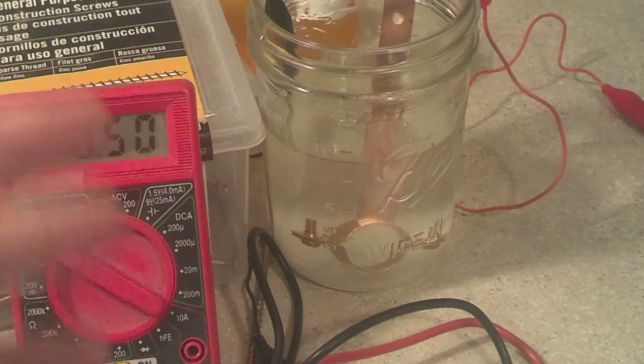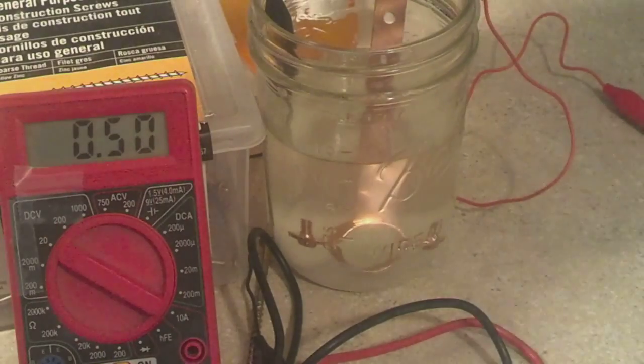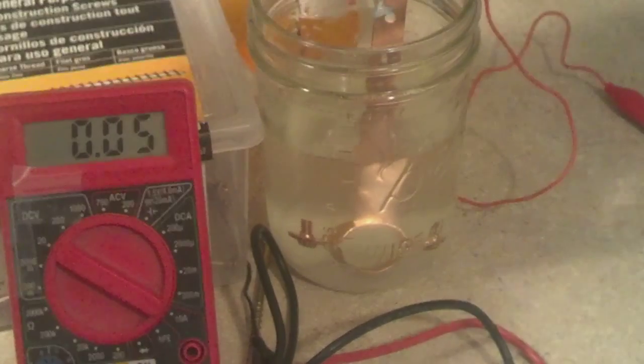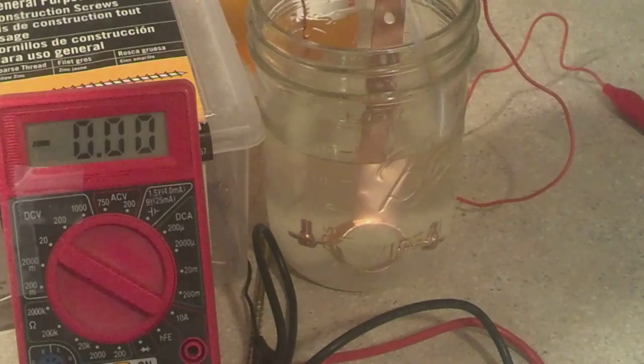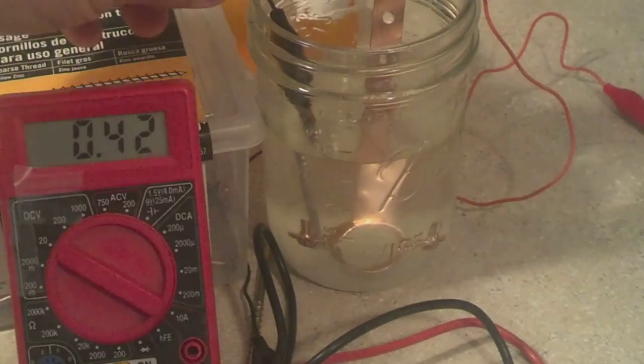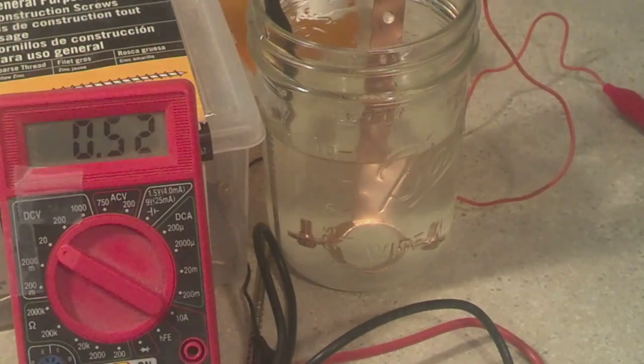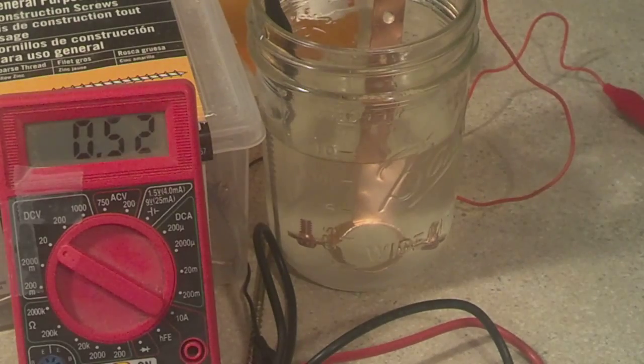Basically, you have to have two dissimilar metals. In this case we're using copper and zinc, a zinc plated drywall screw. And it's yielding about half a volt, open current.